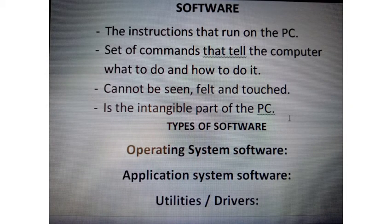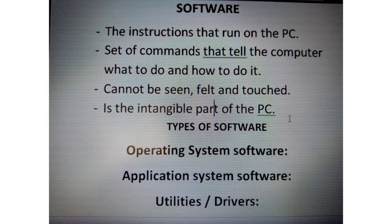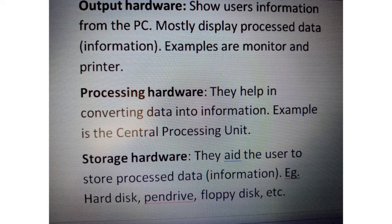Software refers to the instructions that run the computer — commands that tell the computer what to do. The types of software include the operating system software and others, which I've all specified.